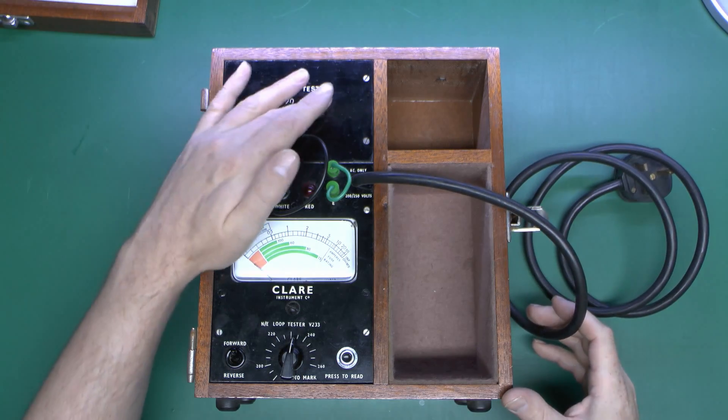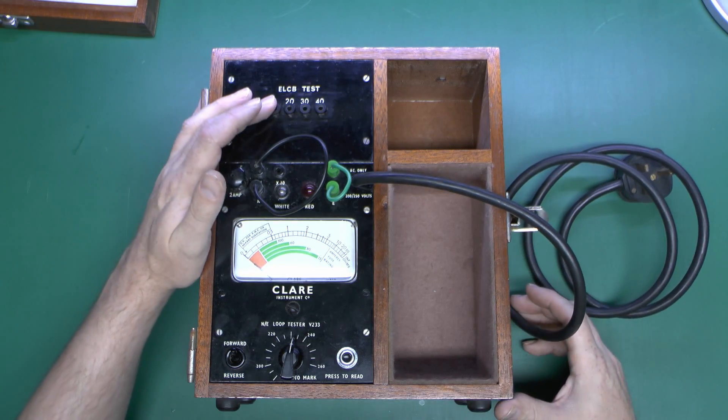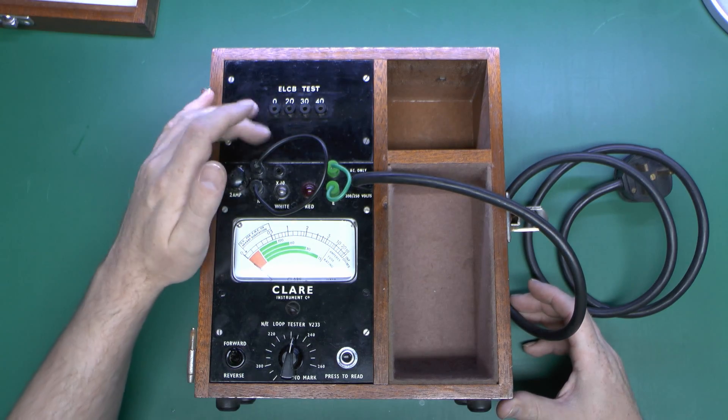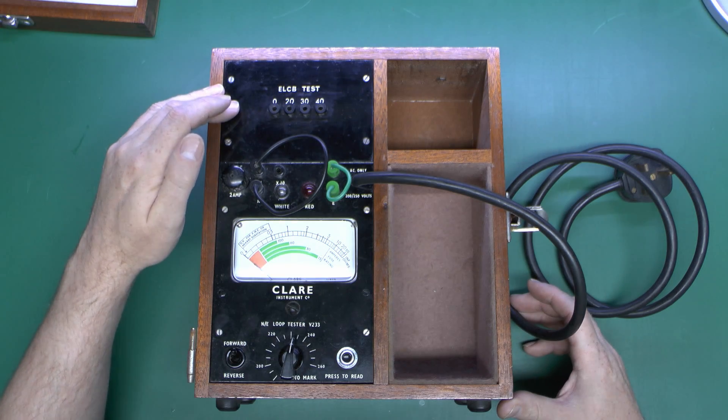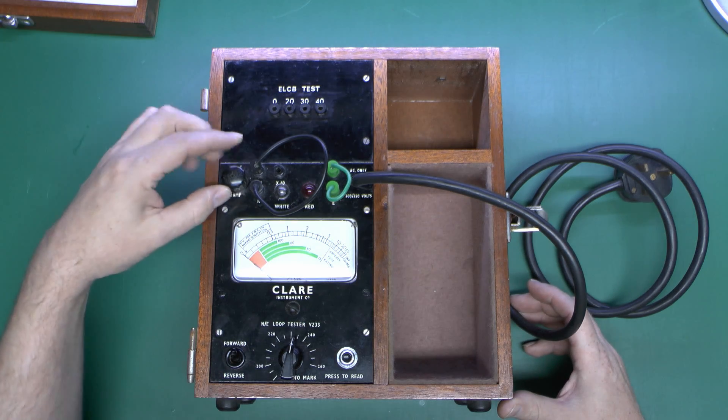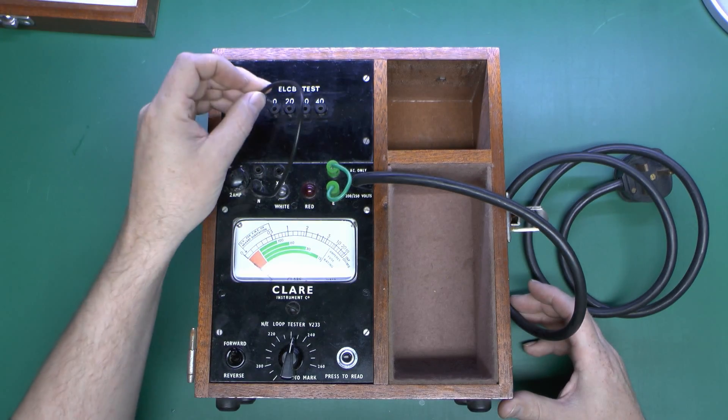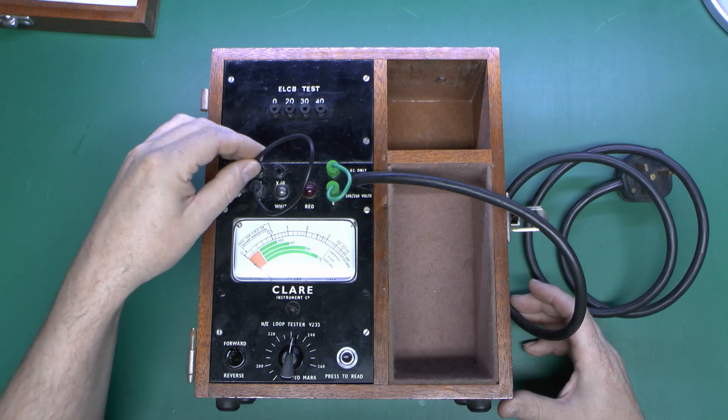On the front of the thing itself, we've got four sockets at the top here, which are marked ELCB test, which is for testing those older type earth leakage circuit breakers. That would be the voltage-operated variety. A two amp fuse, a neutral link, and an earth link, and these can be removed and plugged in at other places as necessary.